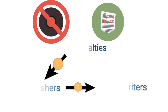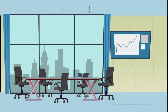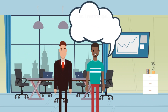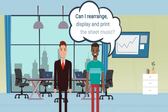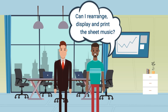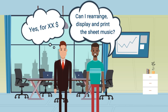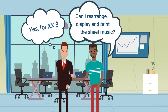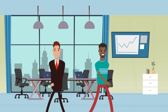What is a print license? A print license is an agreement between a copyright owner, music publisher, and the user of the copyright. It grants permission to rearrange, display, and print the sheet music, notes, or lyrics of a song. Even the smallest usage requires a print license.